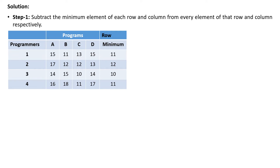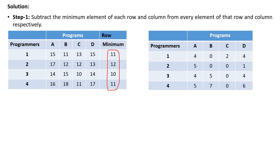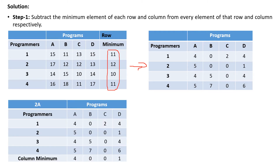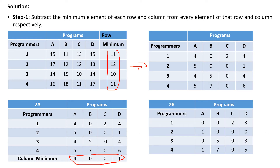The first step is to subtract the minimum element of each row and column from every element of that row and column respectively. We find the row minimums and subtract: 11 from the first row, 12 from the second row, 10 from the third row, and 11 from the last row. We get the reduced matrix. Next, we subtract the column minimums obtained from this resulting matrix — subtracting 4 from the first column, 0 from the second, 0 from the third, and 1 from the fourth column — to get the final reduced cost matrix.